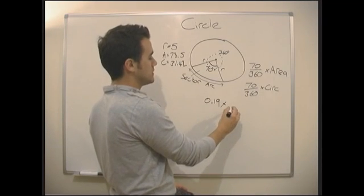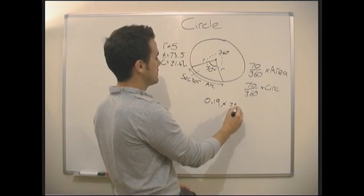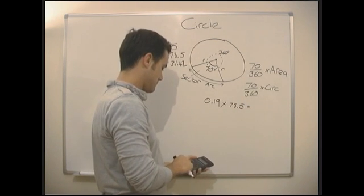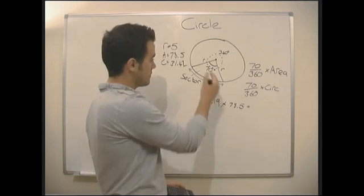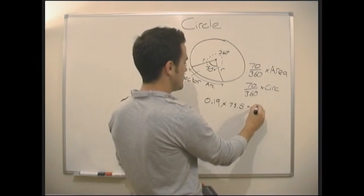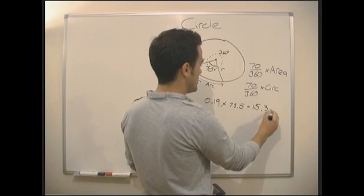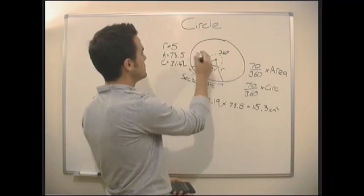So we just do 0.19 times by the area, gives us the area of this sector which is 15.3 centimeters squared. Let's remember units here.